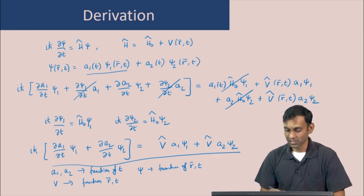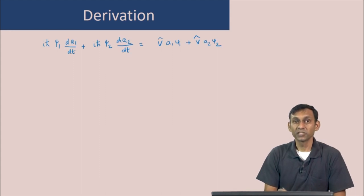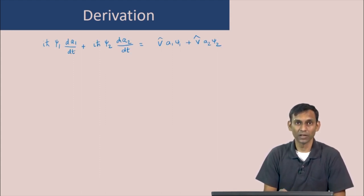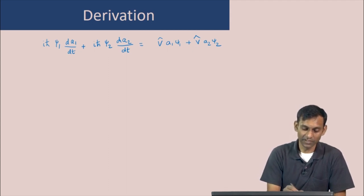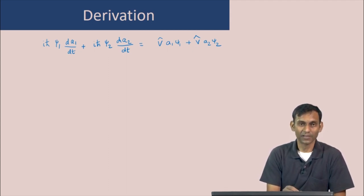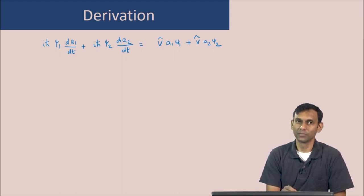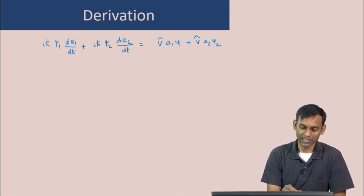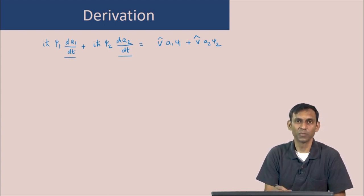Copying to the next page and continuing the derivation: the equation is the same as before, except that instead of the partial derivative with respect to time, we write a regular derivative, since a does not depend on any variable other than time.